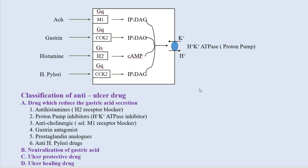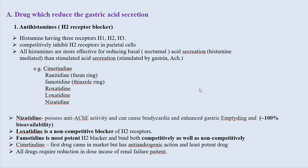The drugs which reduce gastric acid secretion include: antihistaminics (H2 blockers); proton pump inhibitors (H+/K+ ATPase inhibitors) — the proton pump is the main source which secretes HCl; anticholinergics (selective M1 receptor blockers or muscarinic receptor blockers); gastrin antagonists; prostaglandin analogs; and anti-H. pylori drugs.